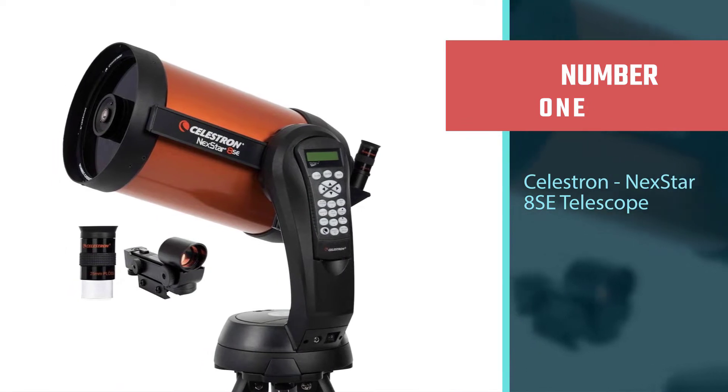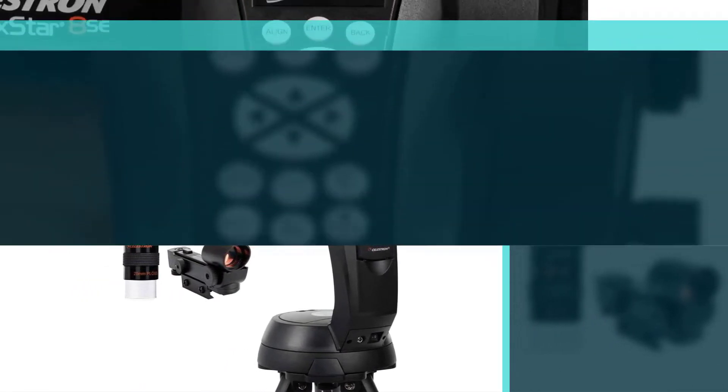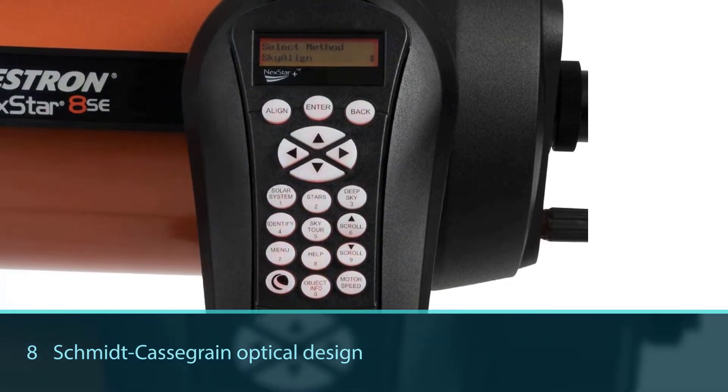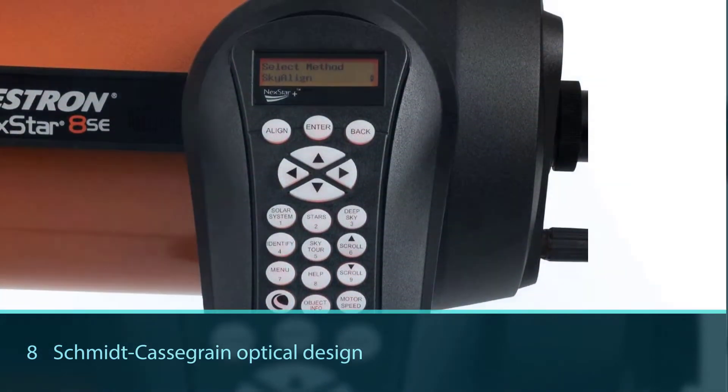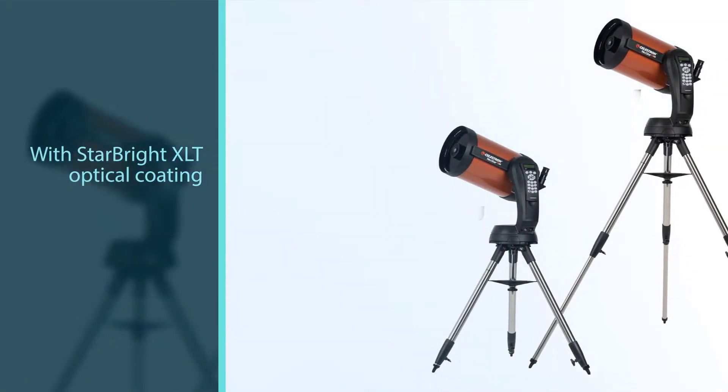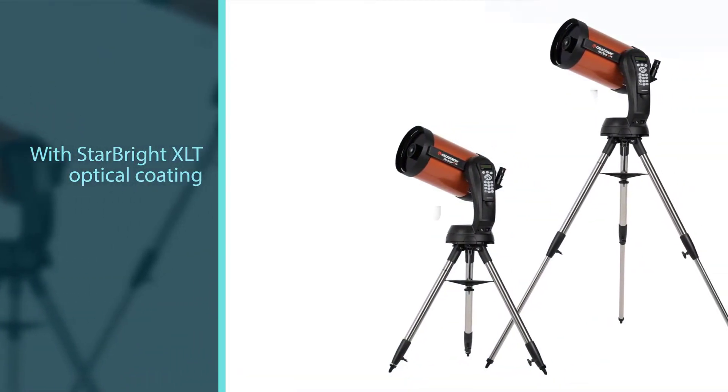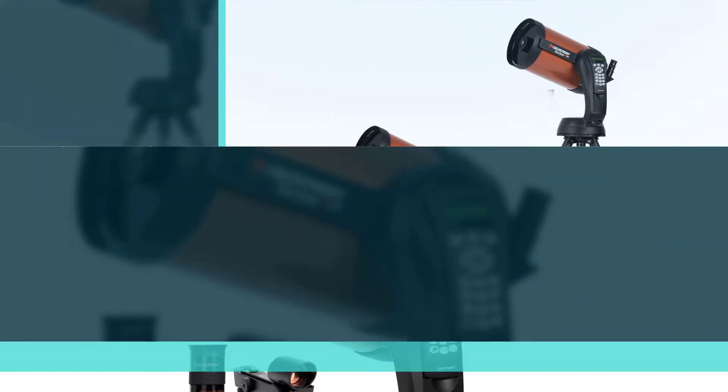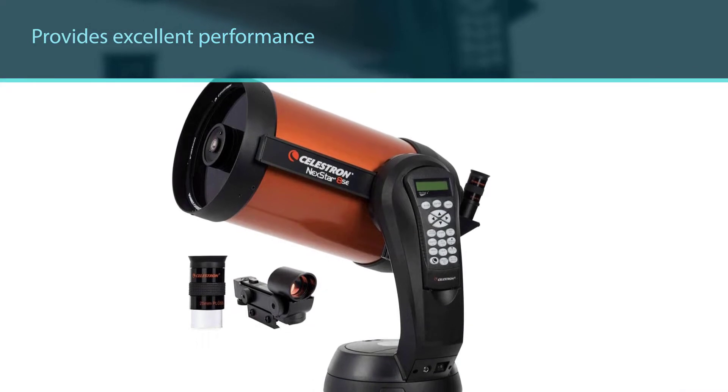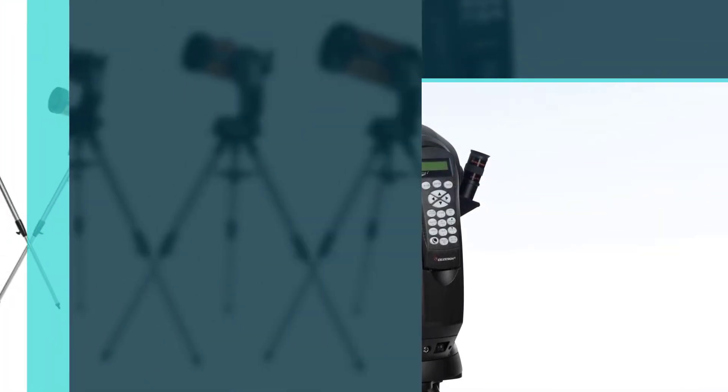Celestron NexStar 8 SE telescope. The NexStar 8 SE excels in a number of areas. First, its Schmidt-Cassegrain optical design with StarBright XLT optical coating provides excellent performance. You can really enjoy bright, detailed images with this scope. Second, the computerized mount quickly orientates itself with SkyAlign technology and can automatically find 40,000 astronomical objects selected by a handheld remote.